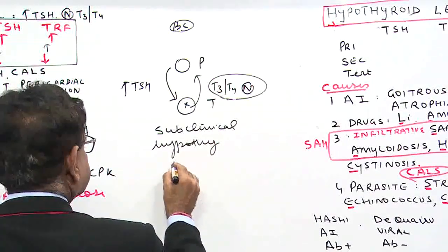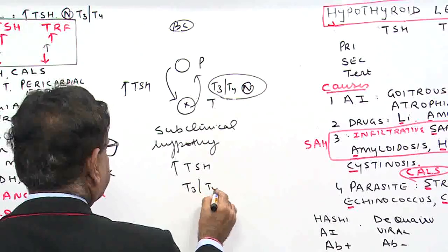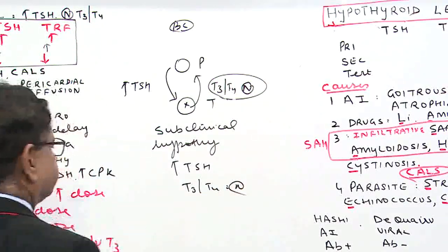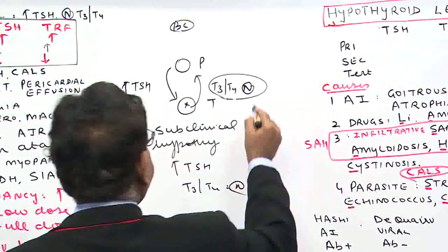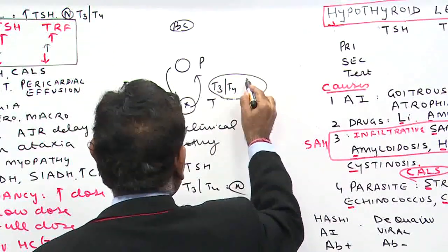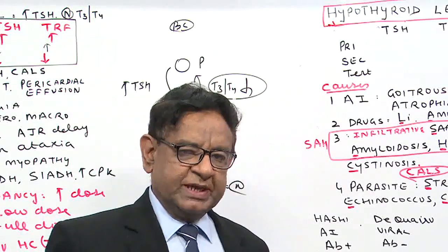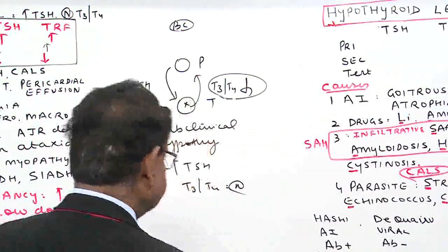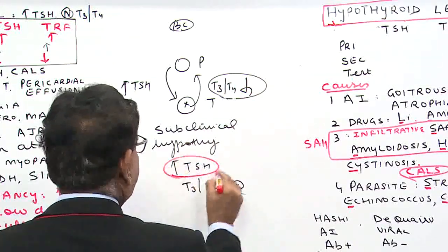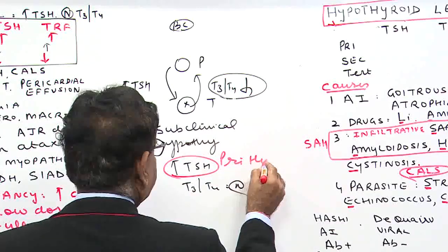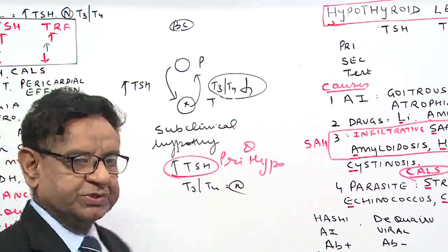In subclinical hypothyroid, TSH is increased and T3, T4 are normal. But in the later, advanced stage of hypothyroid, even T3 and T4 levels will also be reduced and TSH remains high. So the carry-home message is: TSH is the single best test to know about primary hypothyroid — this is a very frequently asked question.